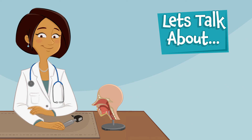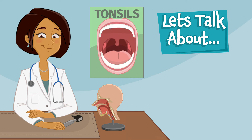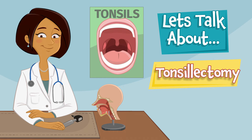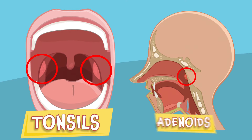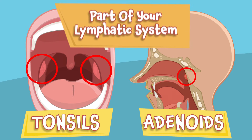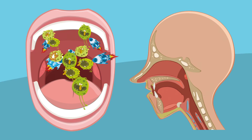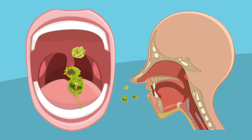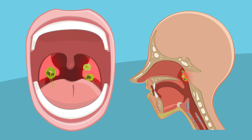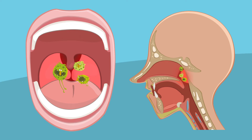Hi there, let's learn about your tonsils and tonsillectomy procedures. Tonsils and adenoids are part of your lymphatic system. They produce antibodies to help your body ward off infection by fighting germs that enter through your mouth and nose. Your tonsils may become infected or inflamed as they work to fight off infection, which can cause you to experience pain.